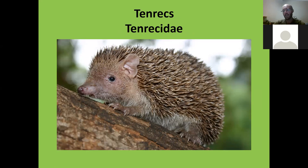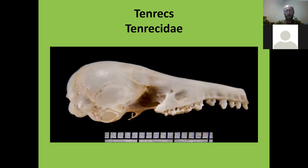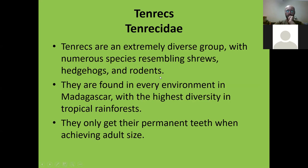Tenrecs — not hedgehogs, even though people tend to think they are. Until even the early 2000s they were classified as cousins of hedgehogs, but genetically we realized they're actually cousins of elephants. They have needle-like teeth but because many are omnivorous they have more pronounced molars. They are an extremely diverse group — like rodents or marsupials — with numerous species resembling shrews, hedgehogs, and rodents. Found in every environment in Madagascar, with the highest diversity in tropical rainforests. They also only get their permanent teeth when they achieve adult size.